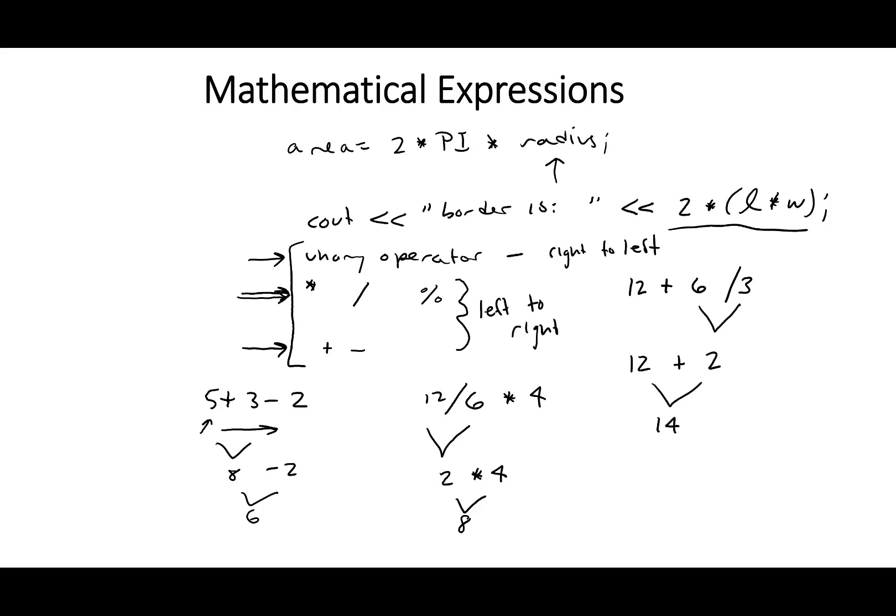So the way that you can force a certain order of calculation is group with parentheses, and you've probably already seen this with doing things on your calculator. Let's say you have 5 plus 2 multiplied by 4. If we don't have any parentheses on this, it's going to multiply the 4 and the 2 first, because the multiply has a higher order of precedence than the plus. So if we wanted the 5 plus 2 to occur first, we just put parentheses around it, and that forces the 5 plus 2 to occur first.